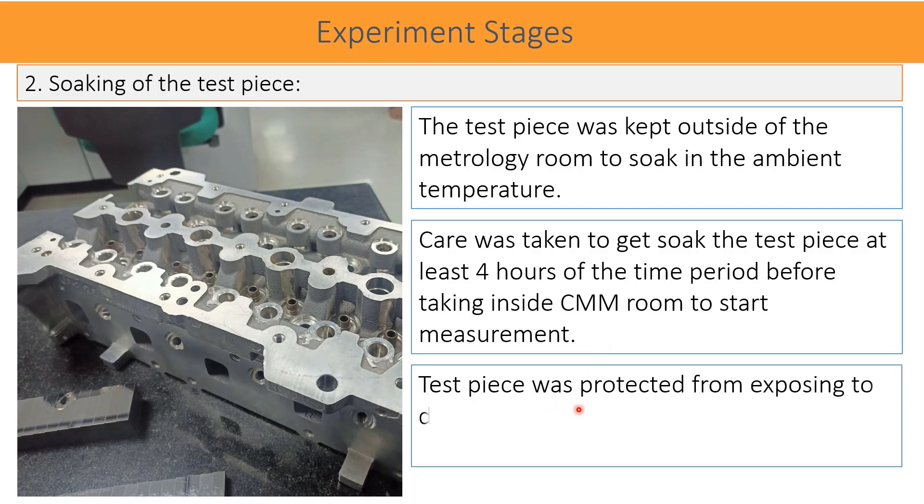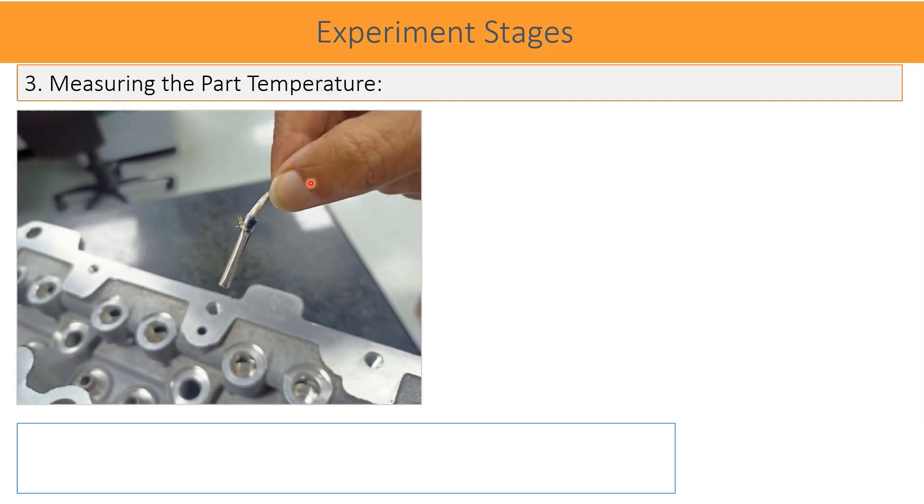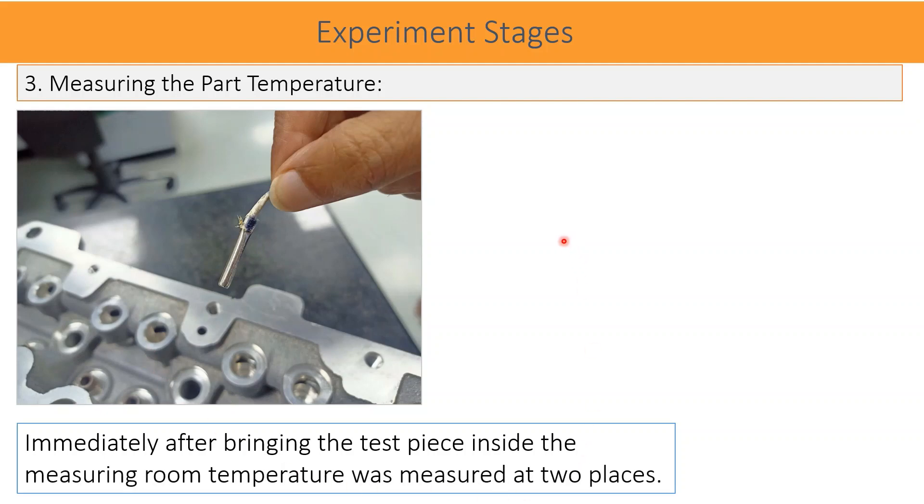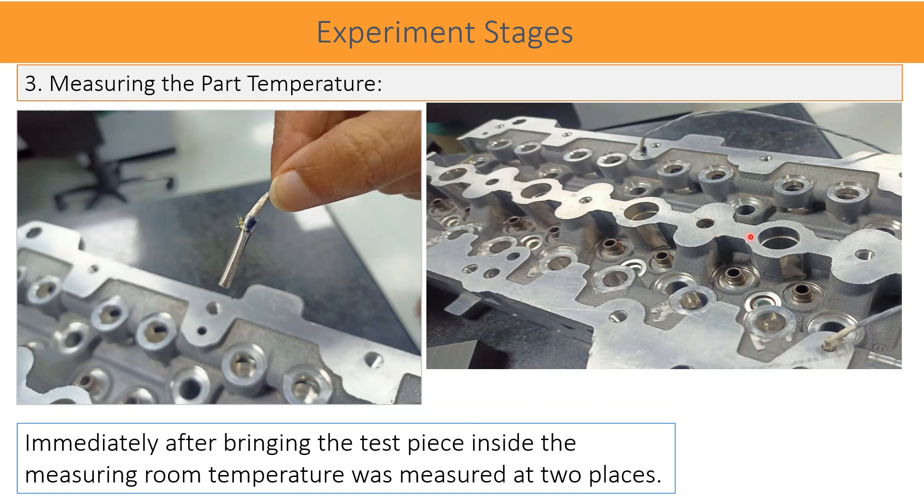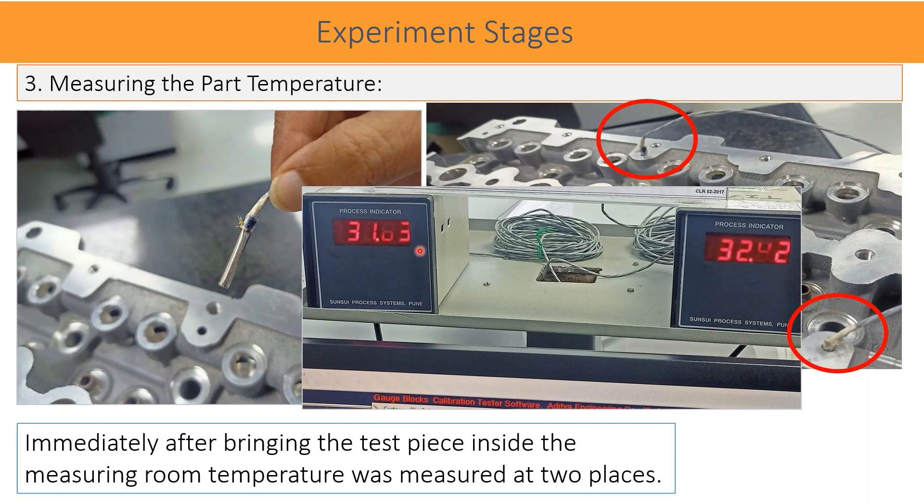The test piece was protected from exposing to direct sunlight and other unwanted things like dust, water, moisture, etc. Measuring the part temperature: after soaking the part for 4 hours in the outside environment, it was brought inside the CMM room. To record the acquired temperature of the part, measurement of temperature is done at two places as shown in the photograph. Two sensors kept inside the two holes touching the body surfaces. The display unit shows the temperature of each sensor. Average temperature is taken as beginning part temperature as 32 degrees centigrade.